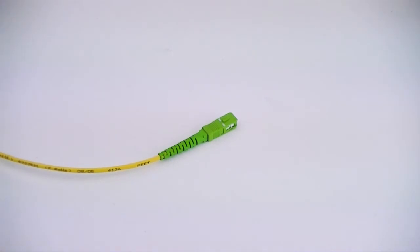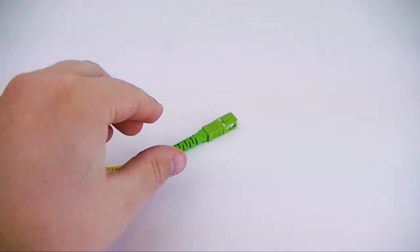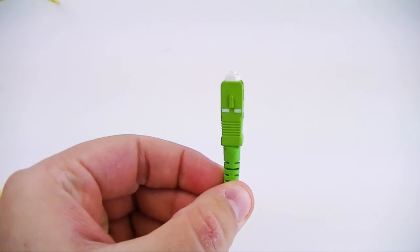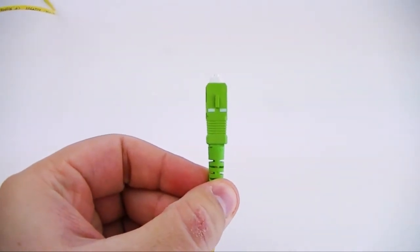SC angled fiber ends, easily recognizable by their green color, offer superior optical links due to the low amount of reflection and loss they allow when mated correctly.